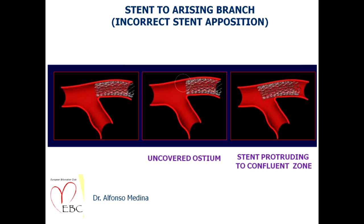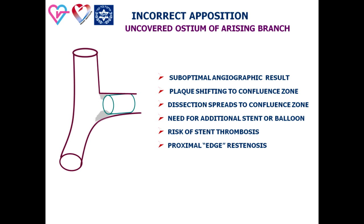The next problem is accurate stent positioning to the branch osteo-segments. Incorrect definition of branch ostia leads to incorrect stent positioning. An uncovered ostium is a cause of suboptimal angiographic results requiring optimization by balloon or additional stent. This may be associated with dissection spreading to the confluence junction and can predict restenosis or thrombosis.